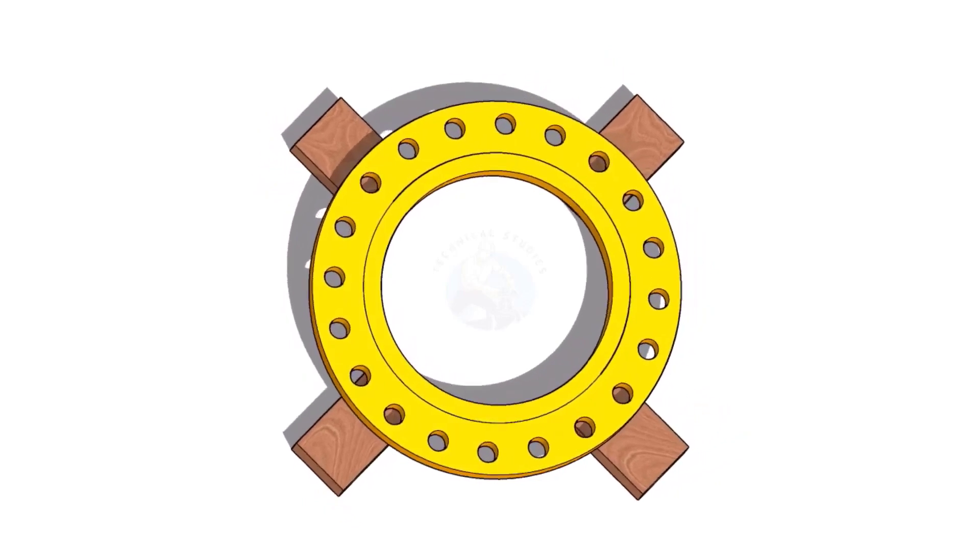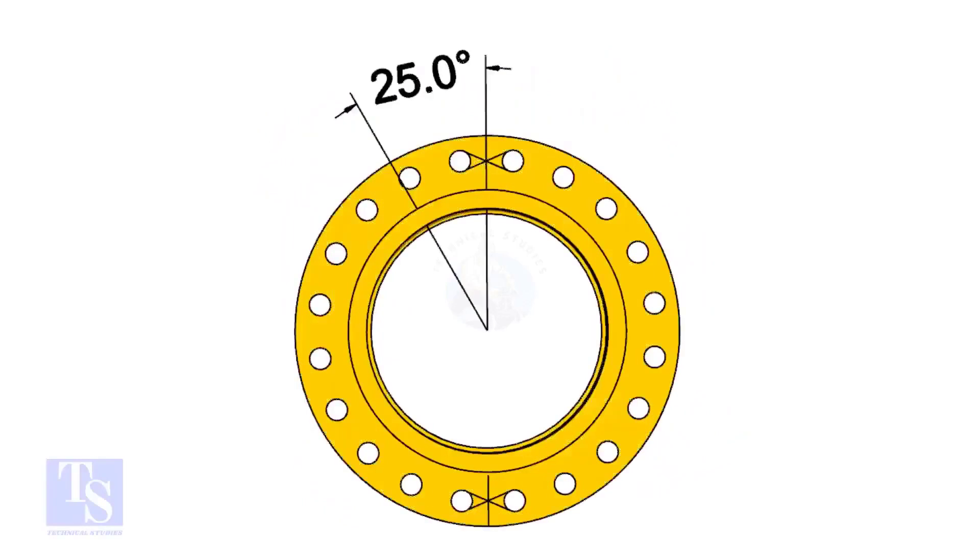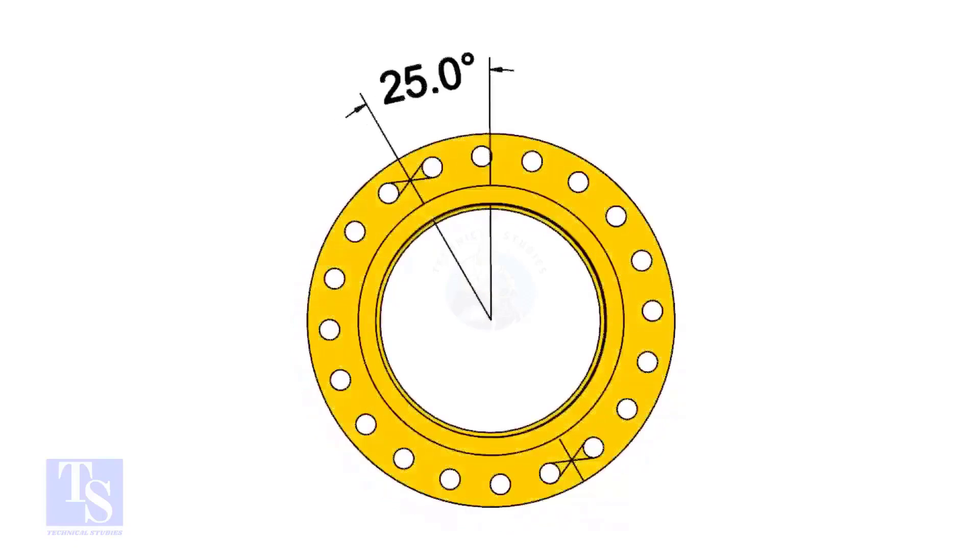The pipe and flange size is 16 inch, and the flange will rotate 25 degrees anticlockwise. Hope you all know the difference between clockwise and anticlockwise rotation.